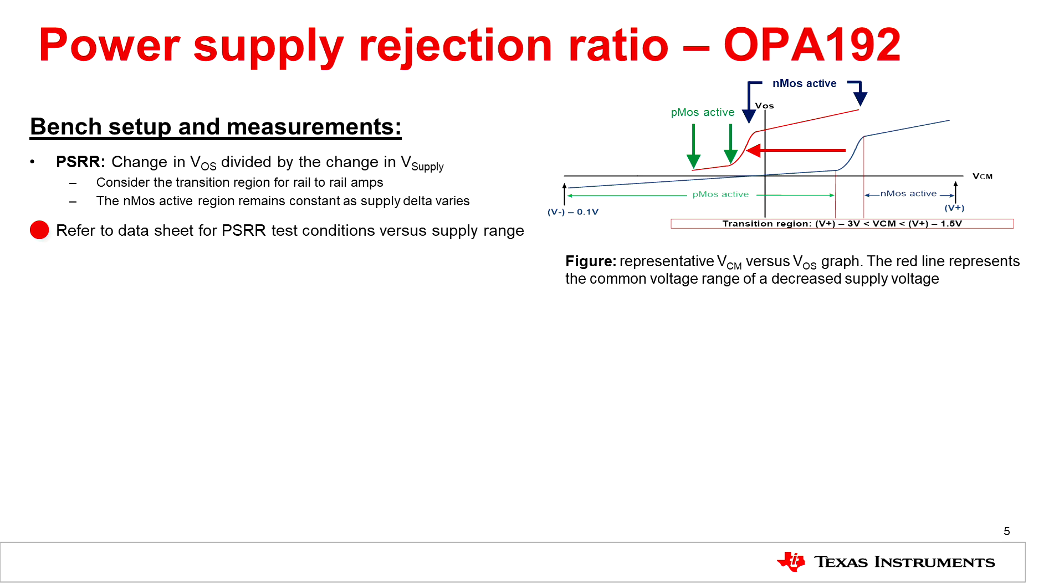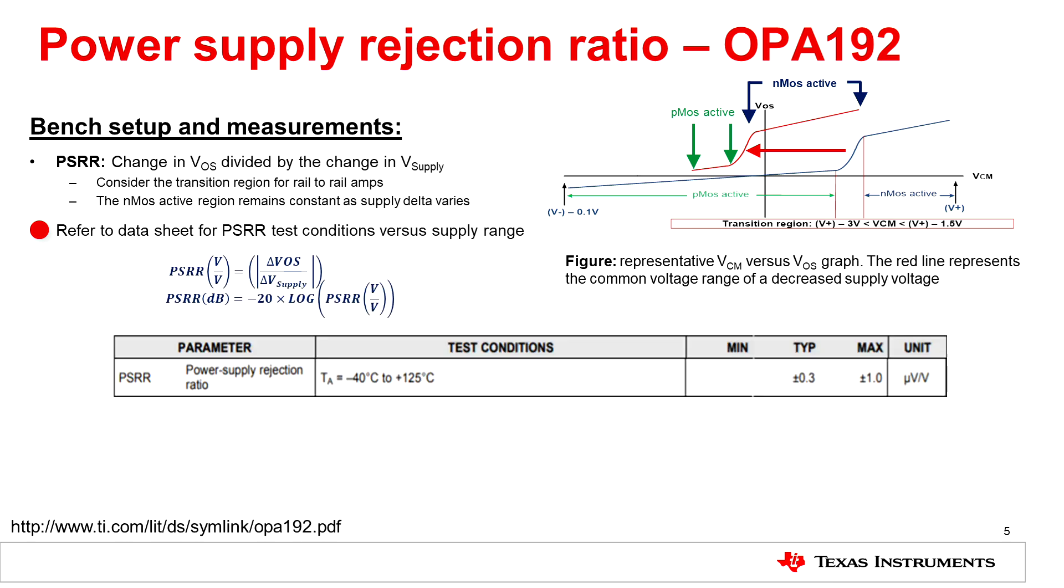Please refer to your TI datasheet, which can be found on TI.com, for test conditions on how to measure PSRR for the TI component. For the OPA 192 example, power supply rejection ratio conditions are shown as follows.